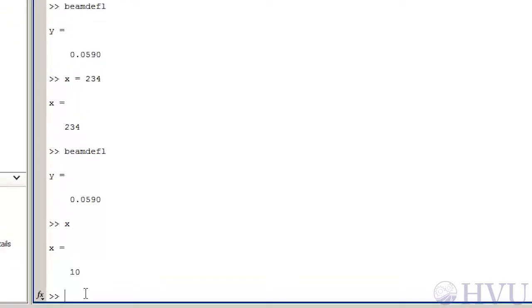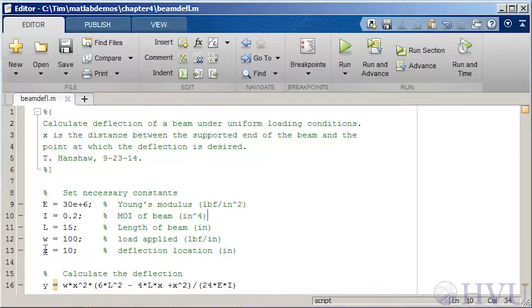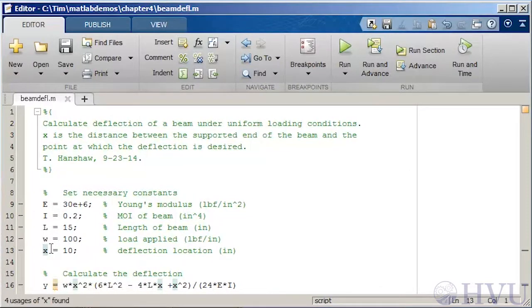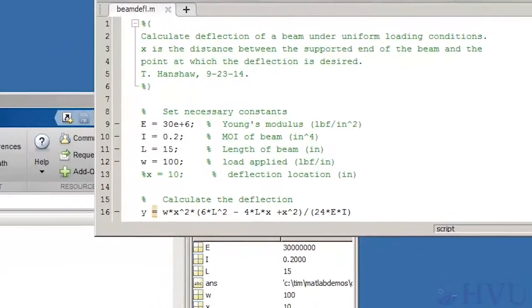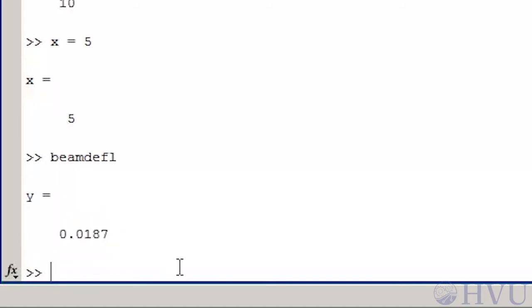However, if I remove the assignment of the X variable in the script file by commenting out that line and resaving the file, and then setting X equals 5 in the command window, the script file will still use the value of X which is already defined at the command window.